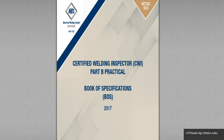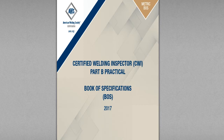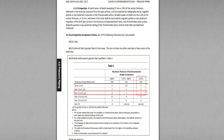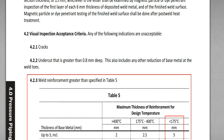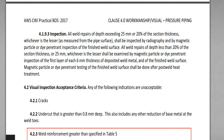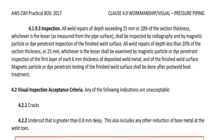Hello, welcome to CWI Part B, Part B Practical Book of Specification BOS lecture. This is lecture 13. Today I'm going to give you a lecture about Chapter 4, and especially 4.2 Visual Inspection Acceptance Criteria. Last time I explained about repair, and today is the Visual Inspection Acceptance Criteria. I'm going to read out the specification and give you the explanation.